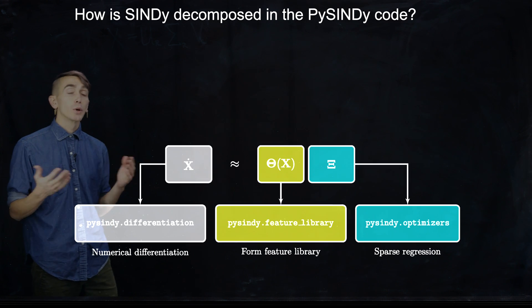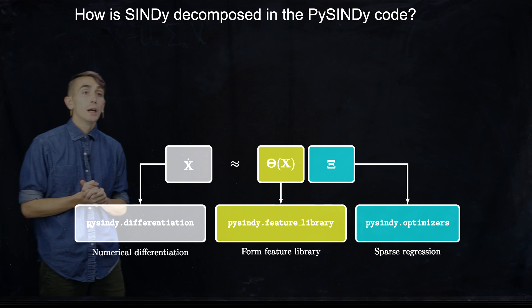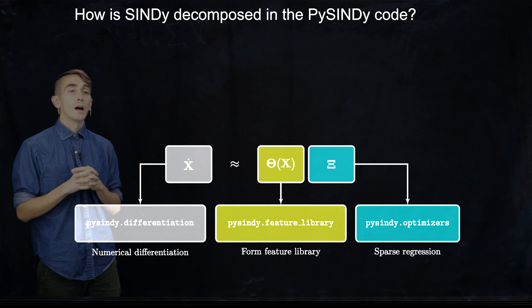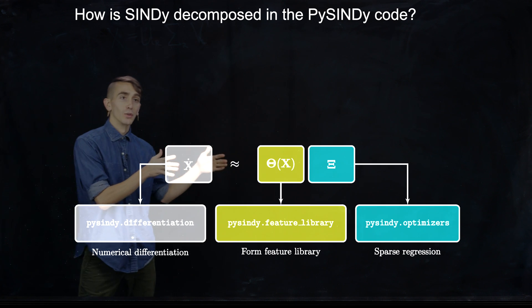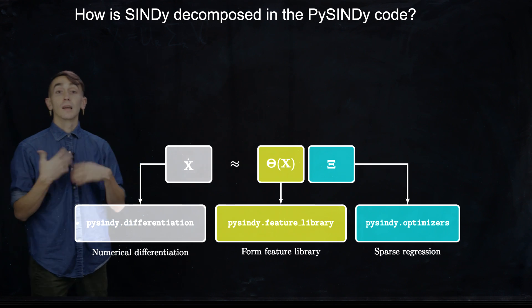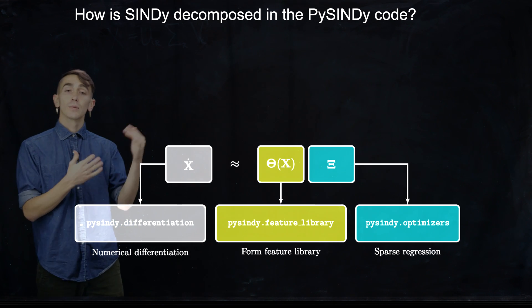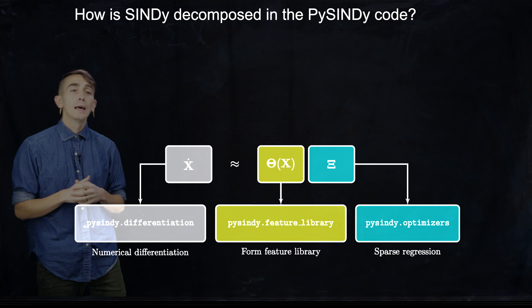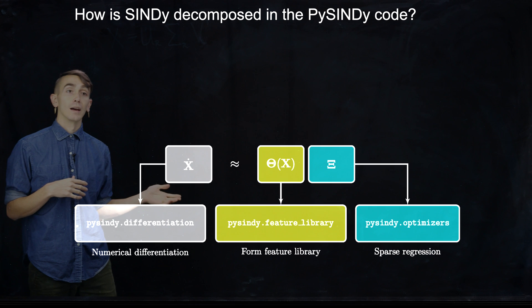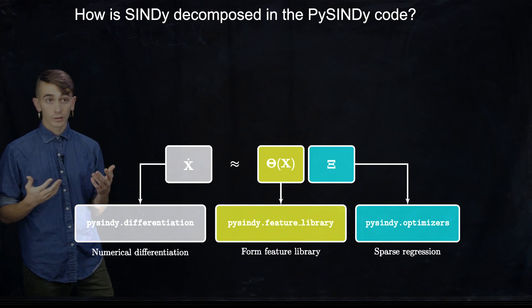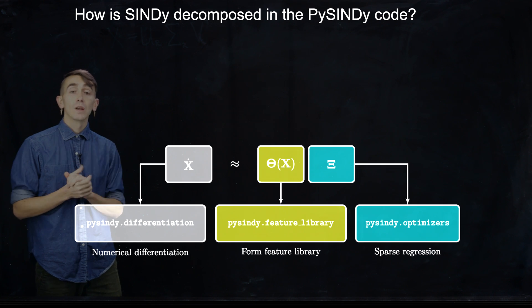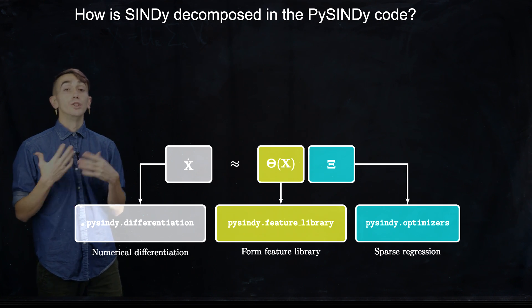How do we actually decompose SINDy into the PySINDy code? Well, it's pretty simple. We take that equation I showed on the last slide. We take x dot, so the left-hand side term. And basically all we need to do is take the measurements of x, y, and z from the Lorenz system, for instance. And then we need a way to differentiate that data to get this data matrix x dot.